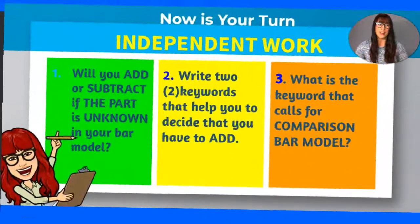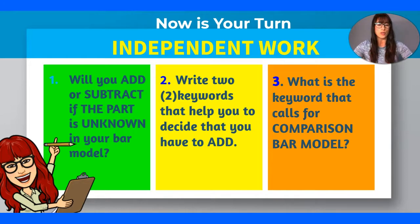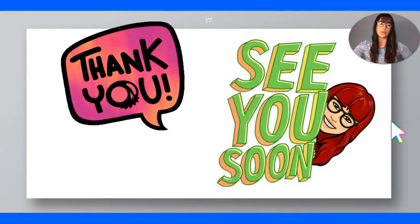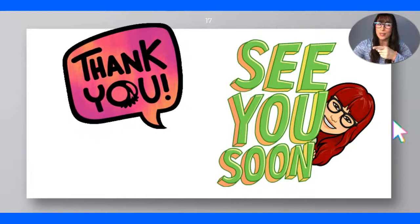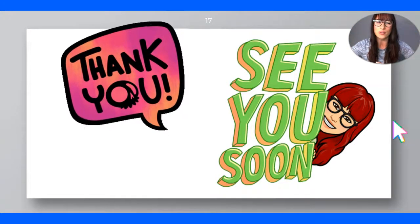I hope this was helpful. Now it's your turn — you have to complete your independent work and write answers to these three questions in your Schoology assignment. Number one: will you add or subtract if the part is unknown in your bar model? Number two: write two keywords that help you decide that you have to add. Number three: what is the keyword that calls for a comparison bar model? Submit your answers to your teacher in Schoology. Thank you for watching — I hope you learned with me. Don't forget the formula; memorize it just like you memorize Bible verses, so you can apply it. Bye everyone, God bless you!